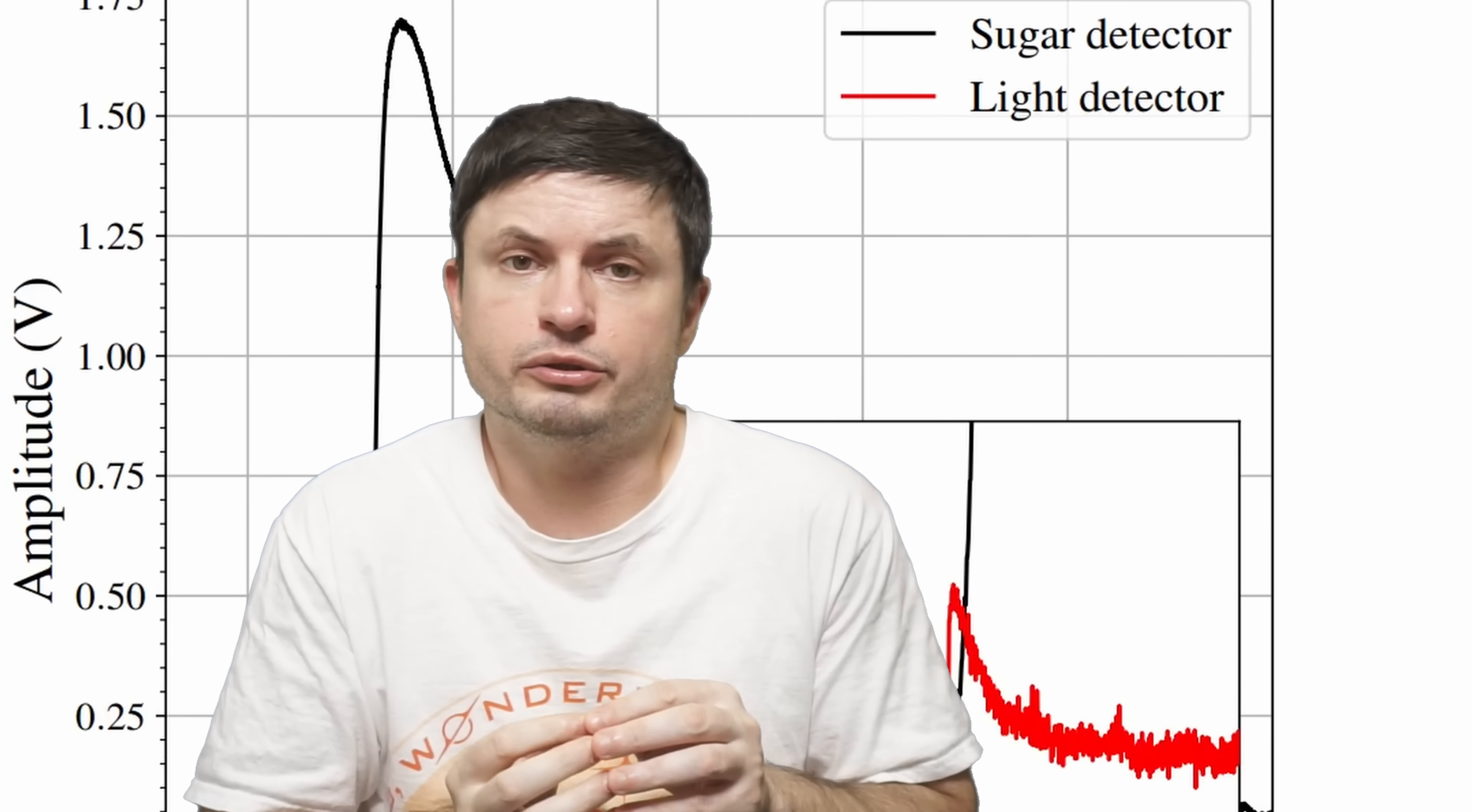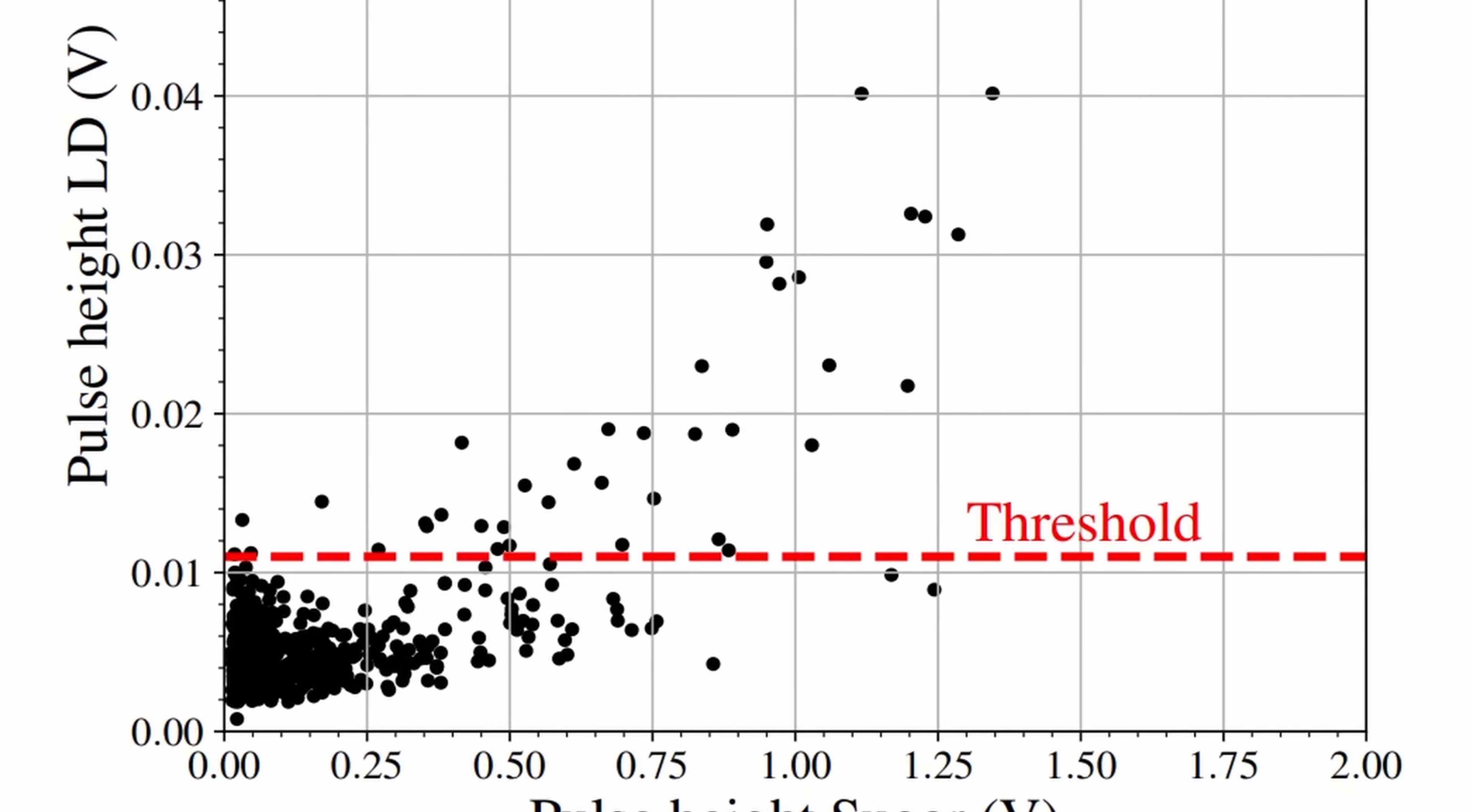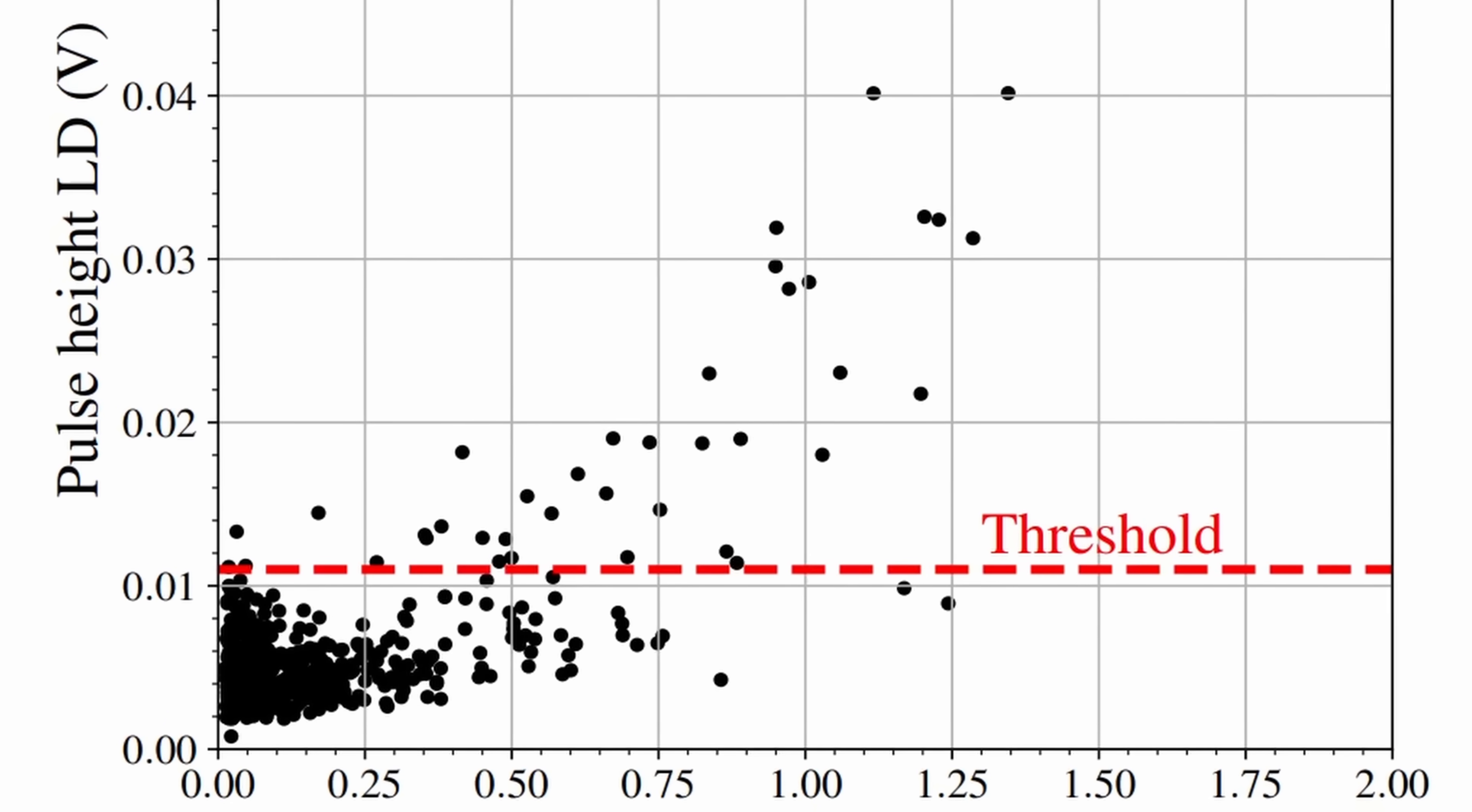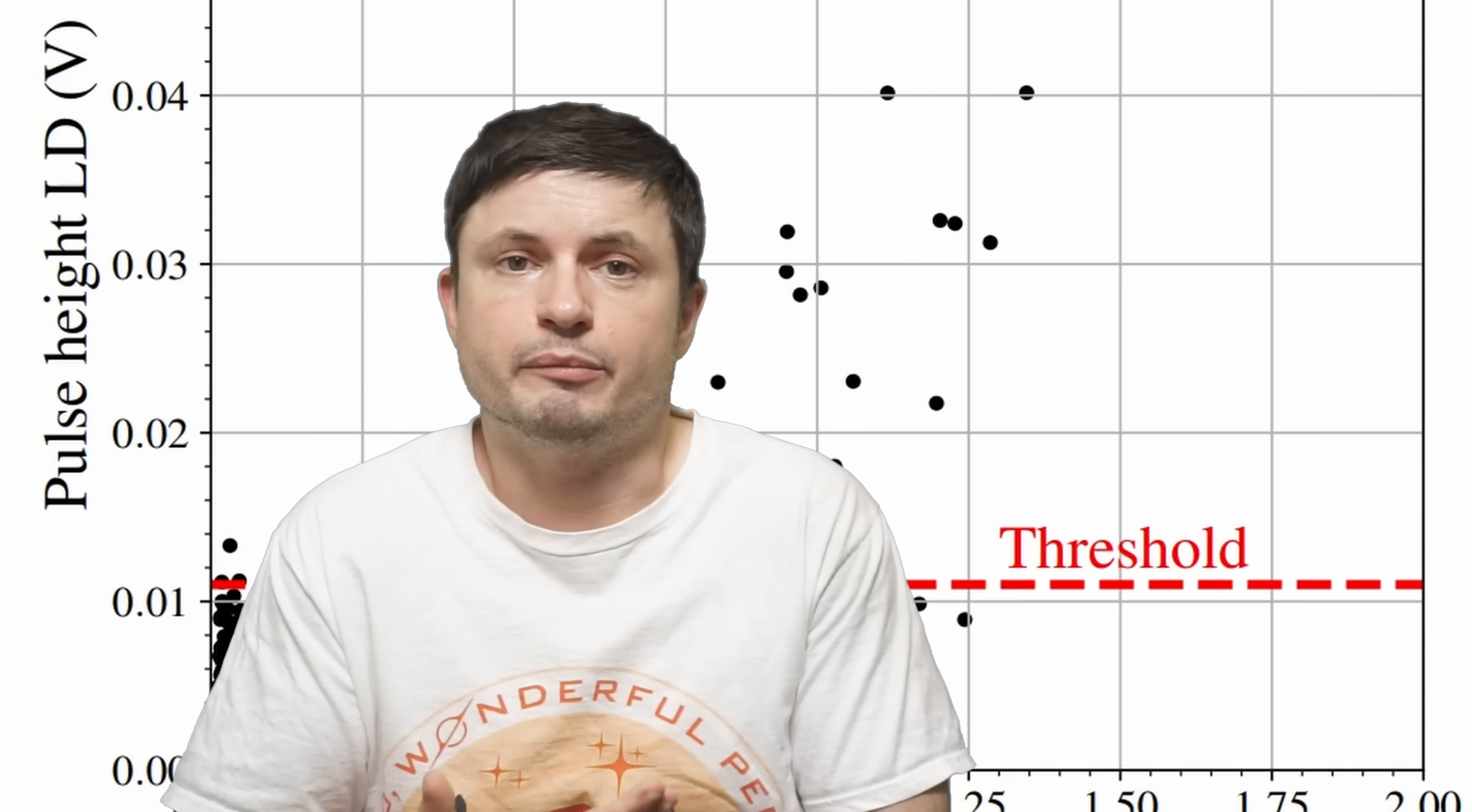With the initial findings confirming that sugar does seem to work because here they successfully detected thermal pulses resulting from particle interactions showing the material response in consistent and measurable manner. Or basically that the material was able to detect certain particles. And more importantly scientists observed a very significant number of events where the heat pulse and the light emission seemed to coincide. So here they definitely detected something.